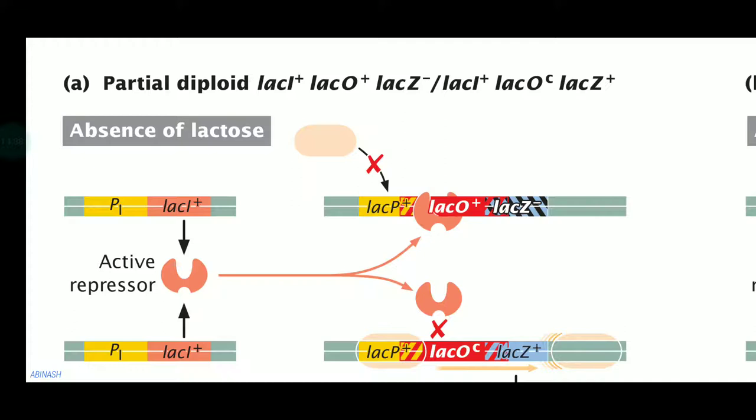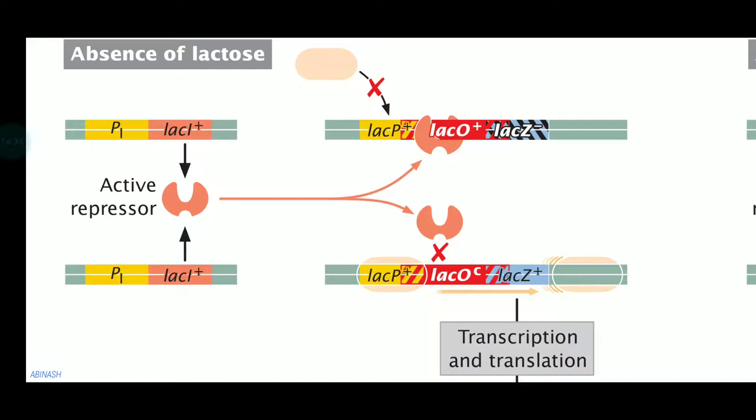The Oc — complementary — means it allows transcription in an unregulated manner; it will keep this chromosome segment on continuously, meaning there will be continuous transcription occurring even though a lot of inducer is present. So let's see what exactly happens in the absence of lactose.